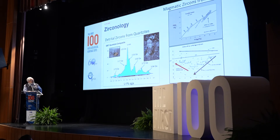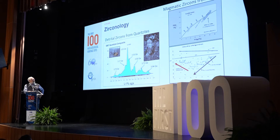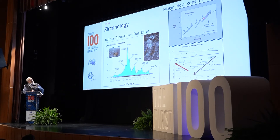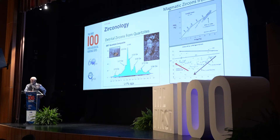The small zircon peak at 2.8 billion years represents zircon overgrowths related to the younger granites. If we look at the gray gneisses, this Concordia plot shows an age of about 3.5 billion years — the age of intrusion of these old gray gneisses.